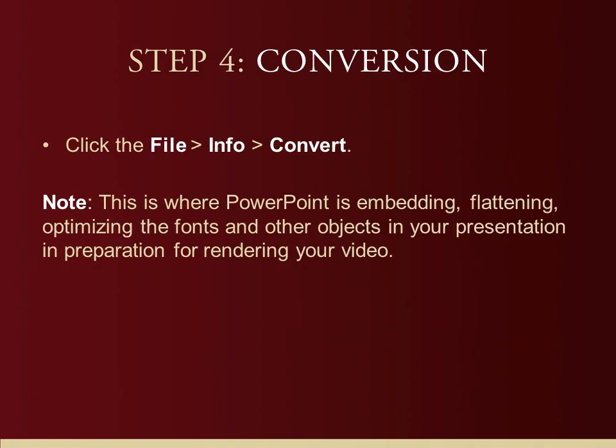Step four: the conversion process. PowerPoint 2010 wants to prepare your PowerPoint so that you can make the video. Go into the File tab in the ribbon, then click Info, and then Convert. Once you do that, you're preparing your PowerPoint for rendering — it's going to embed, flatten, and optimize fonts and other objects in your presentation so that it's prepared to make a video of your PowerPoint.